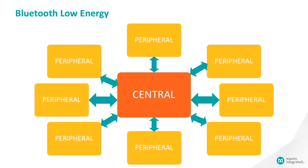There's nothing to prevent a given device from serving in both the central role for a set of peripherals and as a peripheral role for another central. For example, you might have a sensor aggregator hub that manages a whole set of sensors that operate as peripherals. The hub accumulates the data as a central and sends it as a block to a PC, which then serves as the central for the aggregator hub operating in the peripheral role.